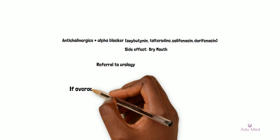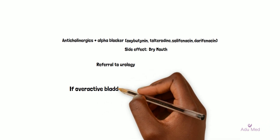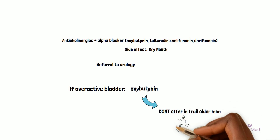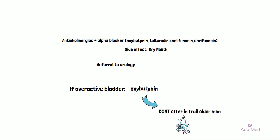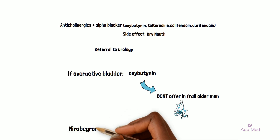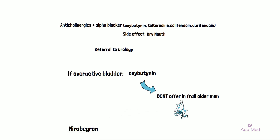If the patient's lower urinary tract symptoms are shown to be due to an overactive bladder, anticholinergics such as oxybutynin can be used. However, it is important not to offer oxybutynin to frail older men due to the risk of impairment of daily functioning. Mirabegron can be used if there is no response to anticholinergics, or if these are inappropriate as outlined earlier.